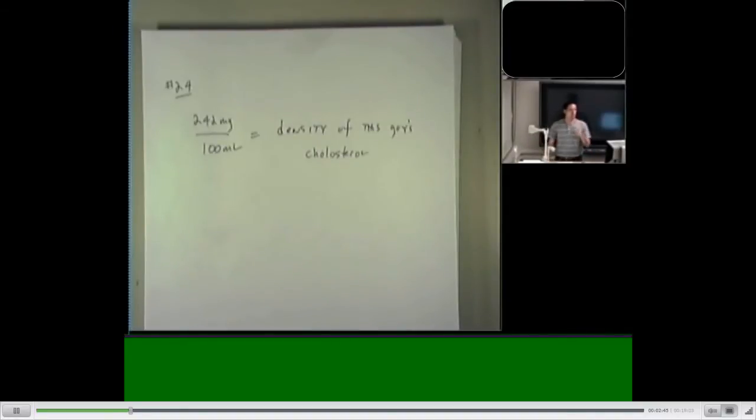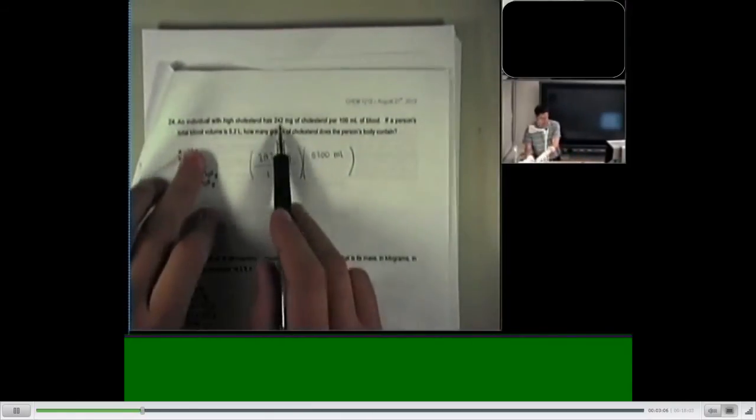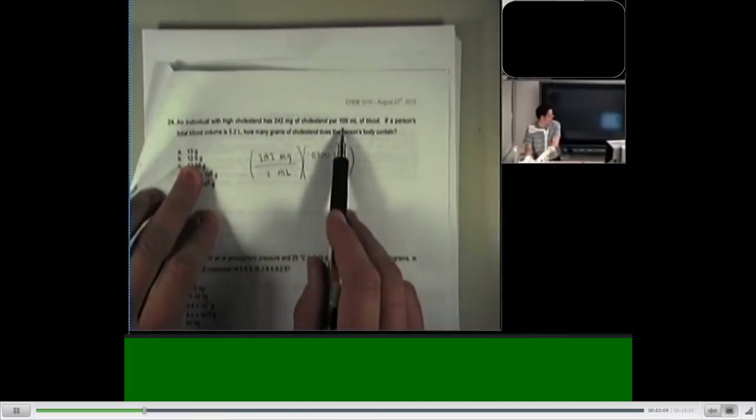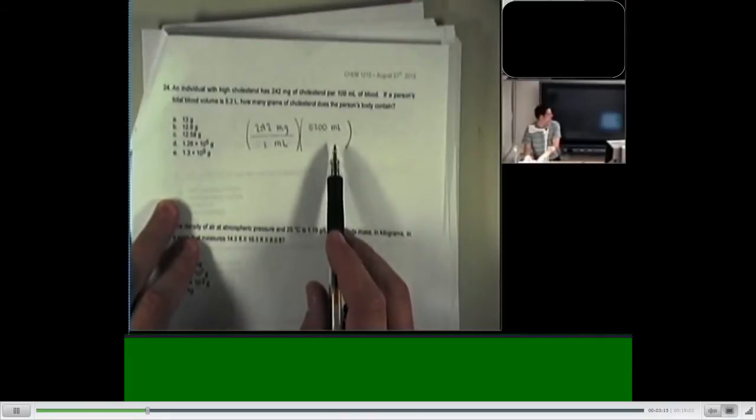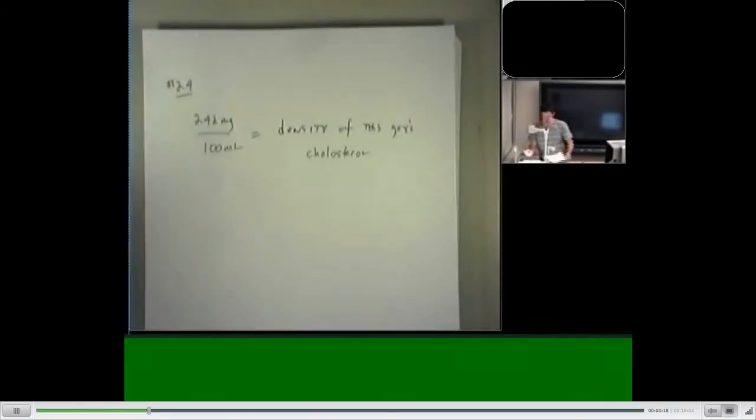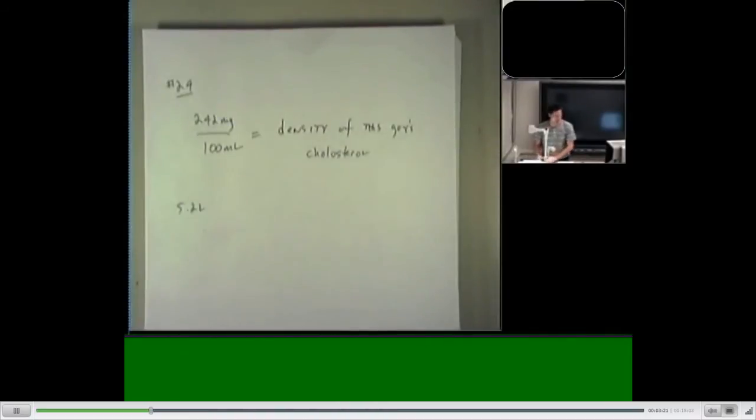All right. So there's this sort of general policy that I almost always follow when I'm doing a unit conversion. And that policy is this. Most of the time, not always, but most of the time, I try to start with the value that has no denominator units. Now looking at this problem, it says 242 milligrams in 100 milliliters of blood. I've told you that's density. What's the only unit left? Yeah, the volume of his blood, 5.2 liters. So what I'm saying is if you guys start with that, that's usually where I start.